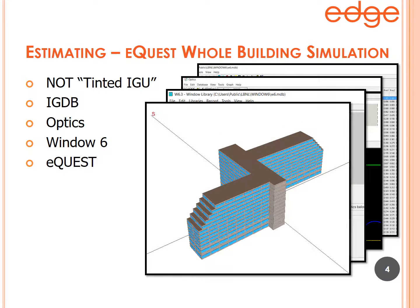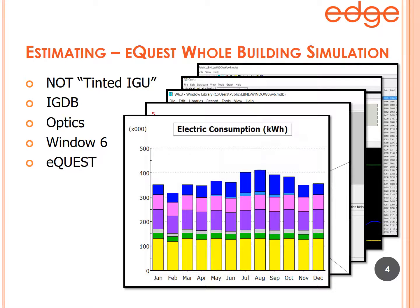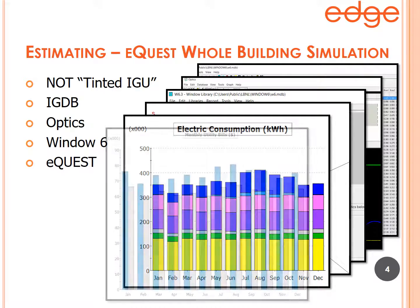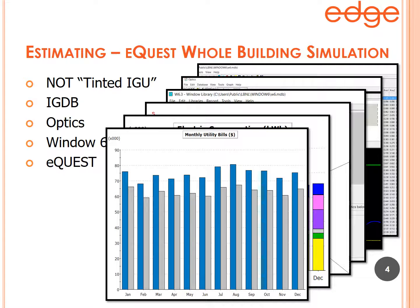We then take that actual window performance and bring it into our eQUEST energy simulation. This is an example of a hotel built in eQUEST to provide a building shell that significantly resembled the actual hotel. The blue windows you see here have been built using the actual glass type, both before and after the application of window film. The results from eQUEST include consumption, demand, and gas consumption broken up by energy system, as well as monthly utility costs for both gas and electric.